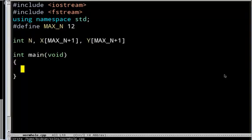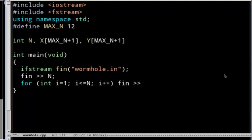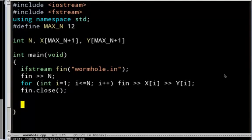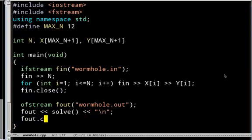Let's create an input file stream for wormhole.in, reads in n, then for i equals 1 up to n I'm going to read in x of i and y of i, then close the file. We've read the input. For output, I'll open wormhole.out and output what I get when I solve the problem followed by a newline, then close the output file and return 0.